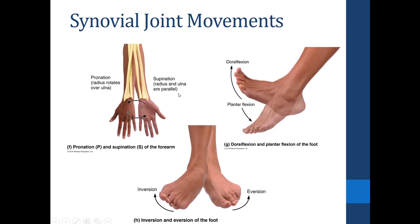That covers the general information about joints. In part two of this lecture, we'll take a closer look at five select synovial joints — the hip, the knee, the shoulder, the elbow, and the TMJ — to explore each in greater detail.